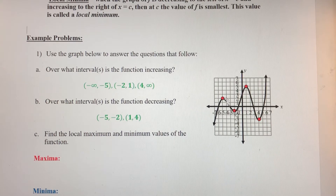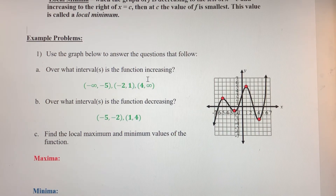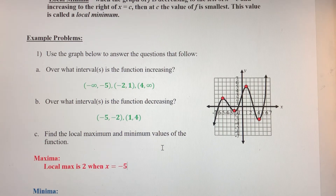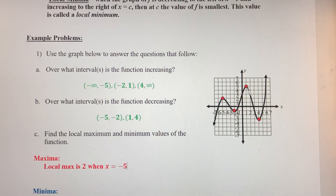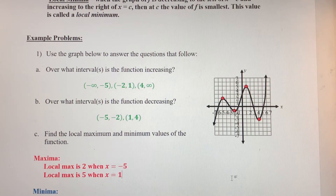Maximum values — the maximum value is the Y-coordinate at that location. The first local maximum value occurs at positive 2, when X is negative 5. The function is increasing, increasing, increasing until we get to that point, then it immediately starts decreasing. The second local max is 5, where Y is 5 when X equals 1. Maximum values can be positive or negative — don't assume they have to be positive just because both of these were.